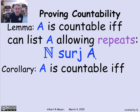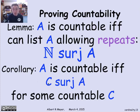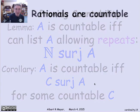A corollary: if I want to show a set A is countable, I just need to find some other set I know to be countable and describe a surjection from that set C to A. Since C is countable, there's a bijection between the non-negative integers and C. Combining a bijection with a surjection gives a surjection, so this implicitly defines a surjection from the non-negative integers to A, making A countable.